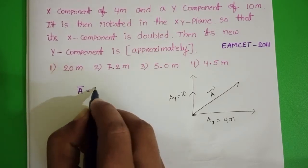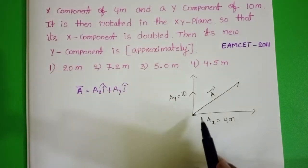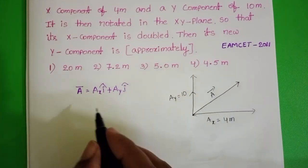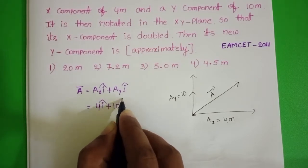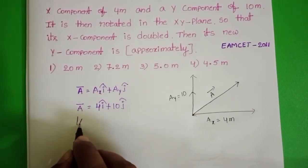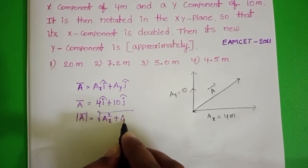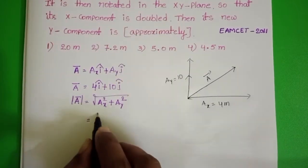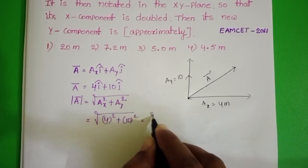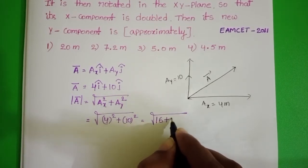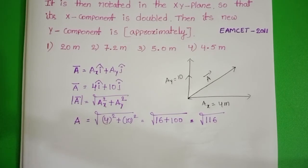a bar equals ax i cap plus ay j cap, where i is the unit vector along the x direction and j is the unit vector along the y direction. Substituting: 4i cap plus 10j cap. The magnitude of the given vector, mod a bar, equals the square root of ax squared plus ay squared — that is square root of 4 squared plus 10 squared, which equals square root of 16 plus 100, giving root of 116.